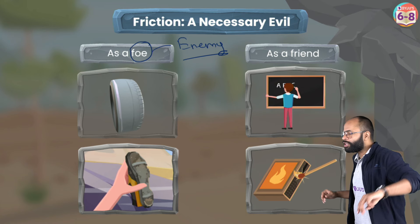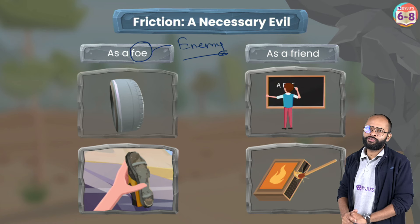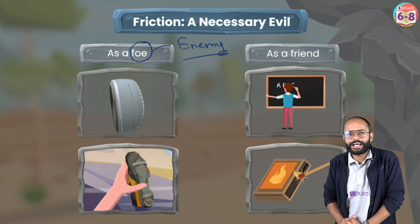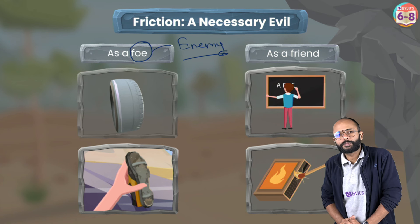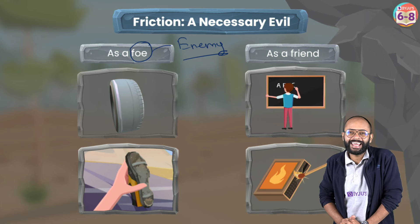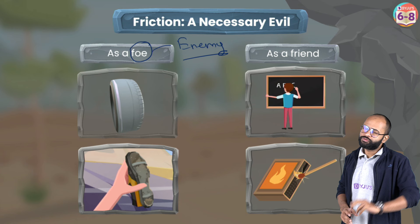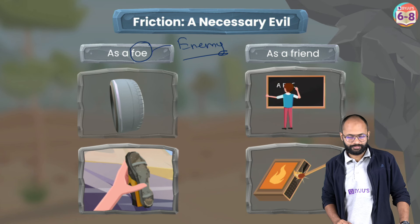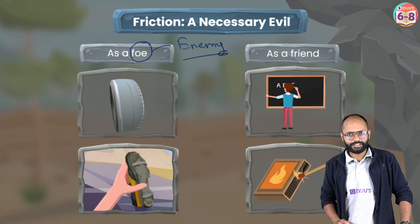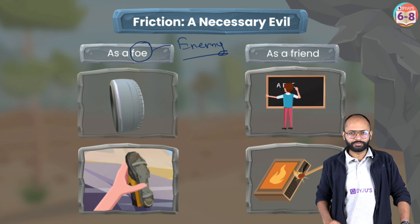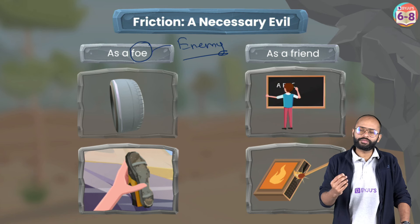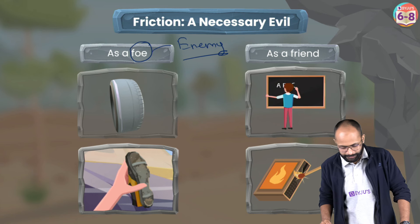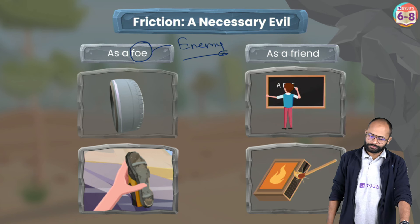A common exam question is: give three reasons where friction acts as an enemy, and give three reasons where friction acts as a friend or well-wisher.